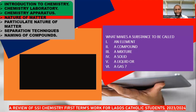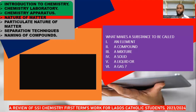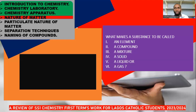An atom is the smallest particle of an element that can take part in a chemical reaction. You need to understand that there is a difference between atom and molecule — we will discuss that when we come to particulate nature of matter. Room temperature is the temperature of the room where an experiment is conducted if there is no external source. In chemistry, we put it as 25 degrees Celsius.